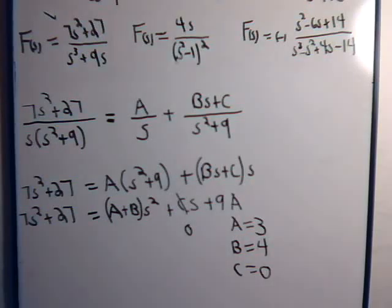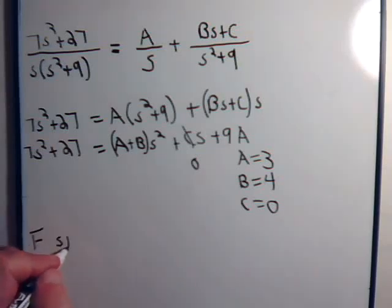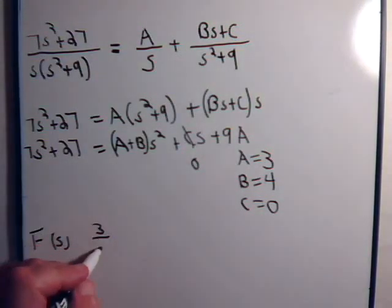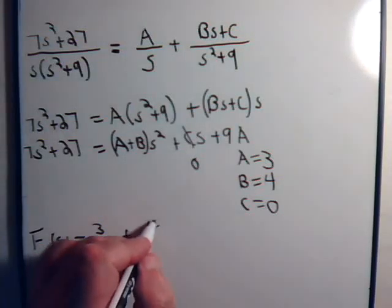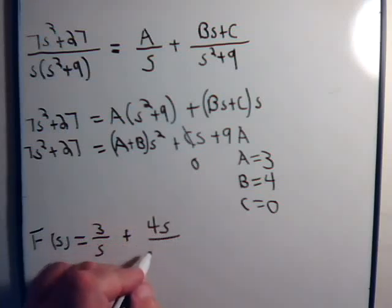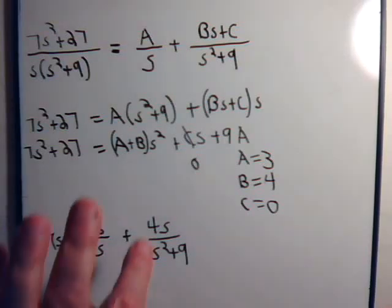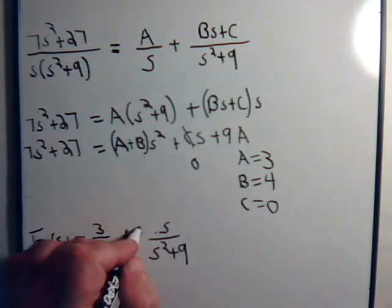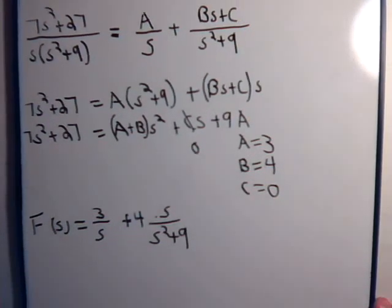So that means now then that f of s, that is equal to A is 3. That's 3 divided by s. And C is 0. So then we have plus 4 times s, divided by s squared plus 9. And we can take the 4 to the outside. So now this, 3 divided by s.